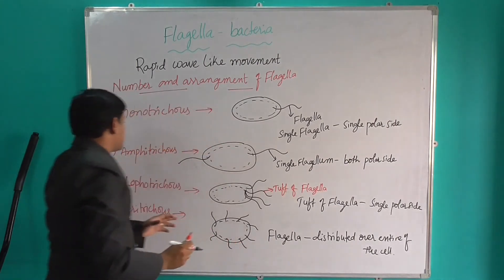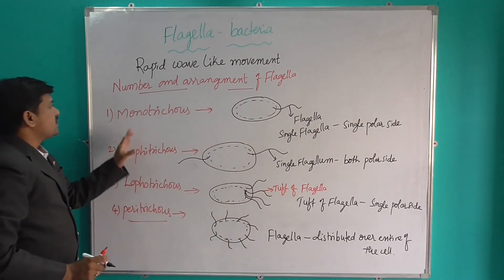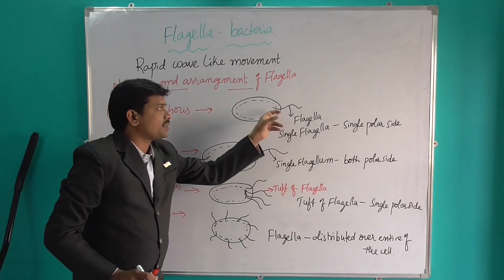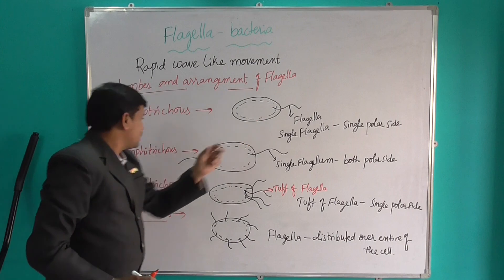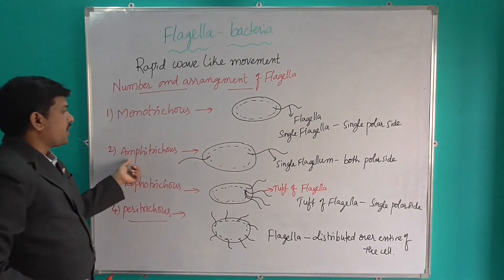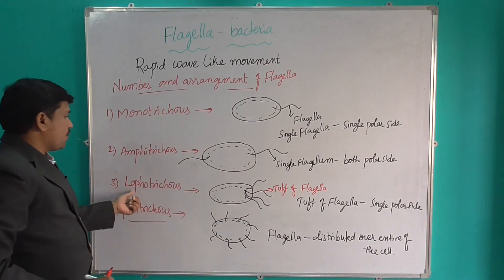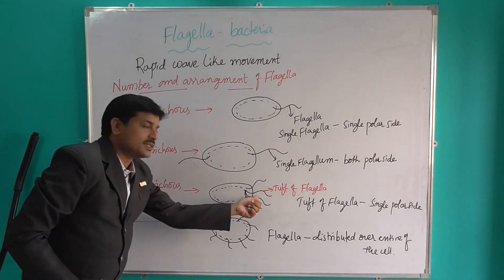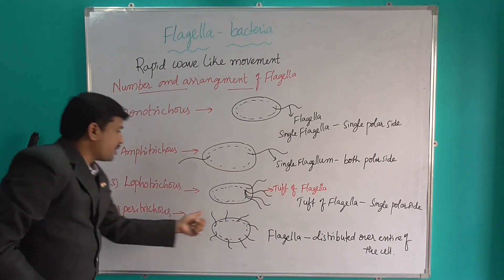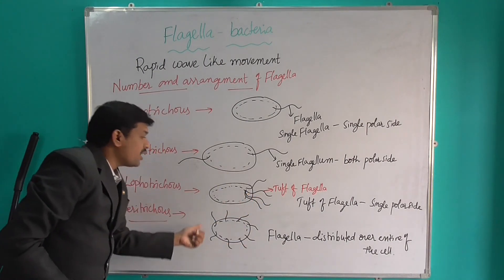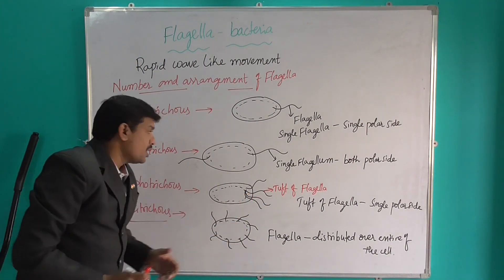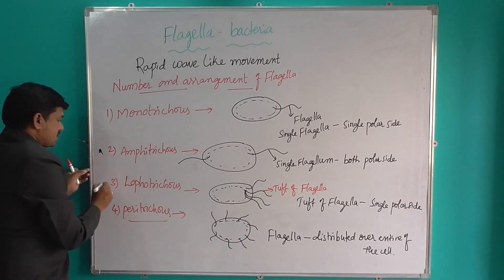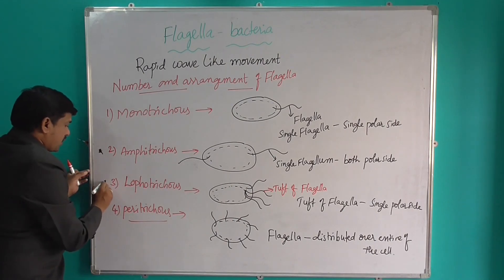So to summarize: monotrichous means single flagella present at a single polar side; amphitrichous means both sides; lophotrichous means a tuft of flagella present at a single polar side; peritrichous means flagella present over the entire cell. Amphitrichous, lophotrichous, and peritrichous are mostly important for examinations.